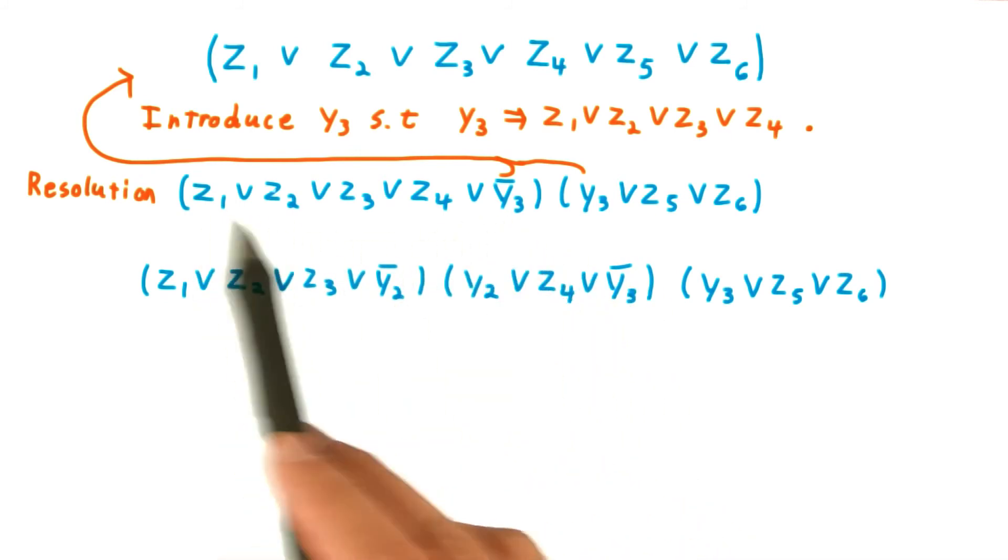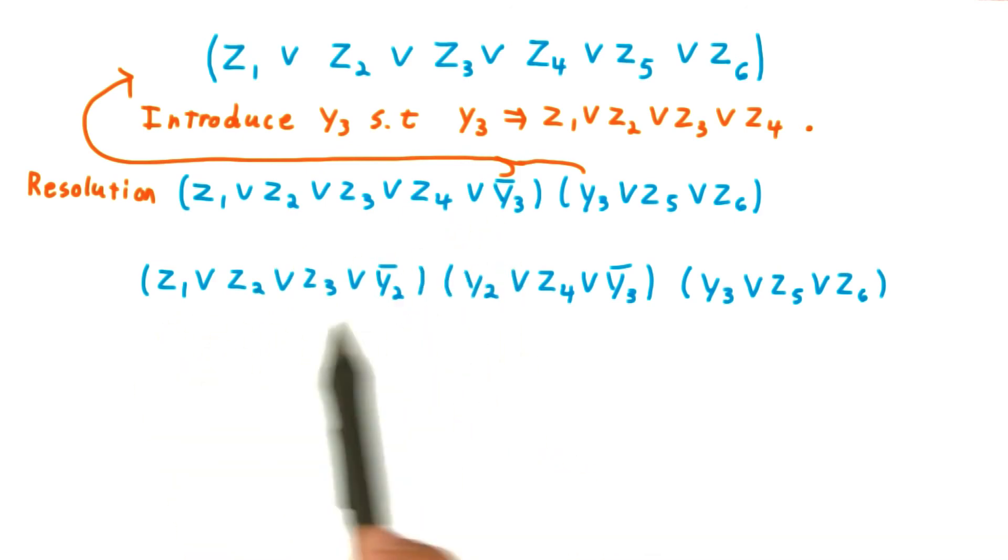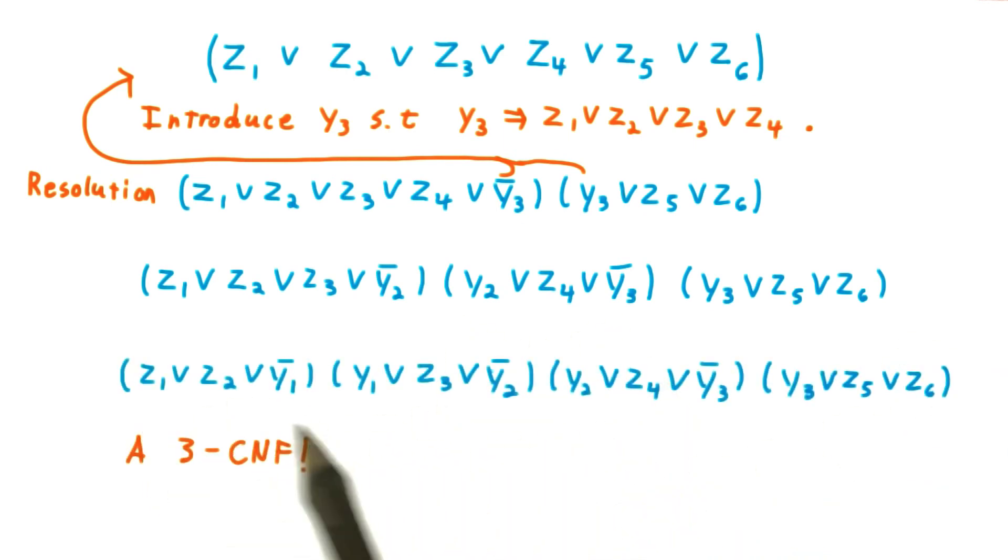and trade this long clause in for a shorter clause, this time one of length 4, and one of length 3. Of course, we can play this trick again, and eventually we have just three literal clauses. This example is for k equals 6, but an inductive argument will show that the argument works for any k greater than 3.